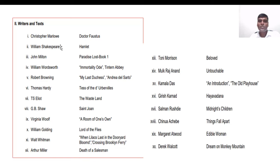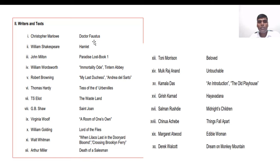I suggest going through various websites like Wikipedia, CliffsNotes, SparkNotes, GradeSaver, and LitCharts for a good analysis of these texts. You may get 50 to 60 questions from the texts — approximately three or four questions from each text, though some texts may have more importance than others.